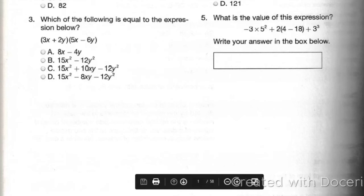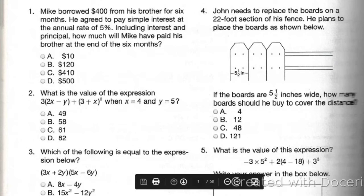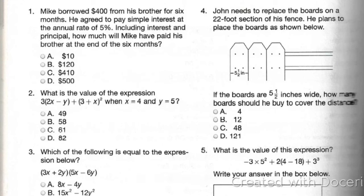9 minutes in. The key is to make sure that you get this stuff done before the time limit, so you have time to look back and see what you need to do, what's missing if you have a problem with anything. Something seems a little more difficult and you want to look at it. Number 4 says, John needs to replace boards on a 22 foot section of his fence. He plans to place boards as shown below. If the boards are 5 and a half inches wide, how many boards should he buy to cover the distance? Pause the video now if you want to try this on your own.